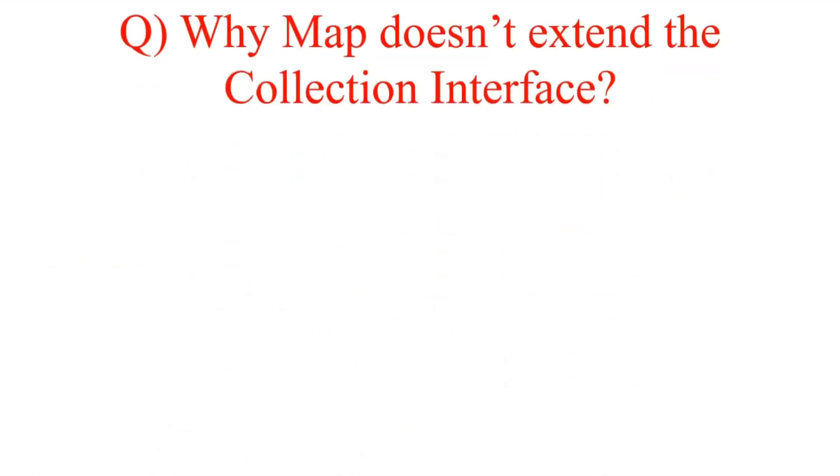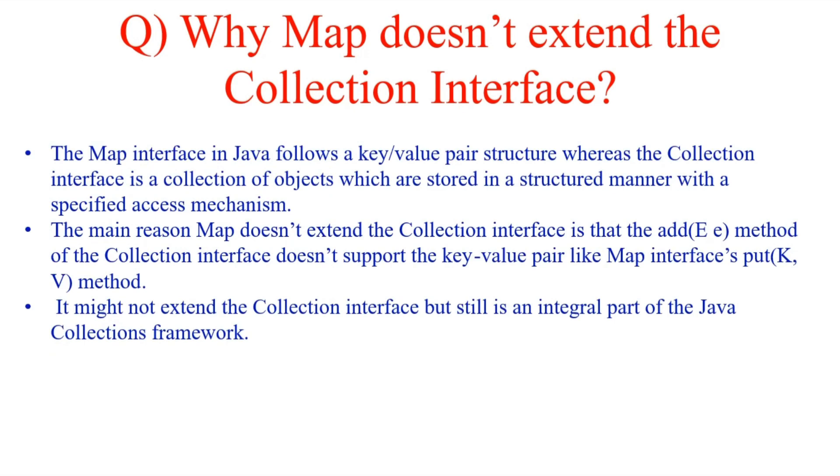Now let's move ahead to another question, a very important question they ask you just after the collection thing: why does Map not extend the Collection interface? So this is a very important question. You need to understand that Map interface actually has a key-value pair structure.